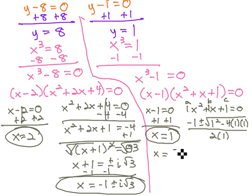So x is equal to negative 1, plus or minus the square root of 1 squared is 1, minus 4 times 1, times 1, is 4, all over 2 times 1, which is 2.